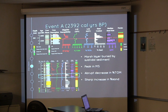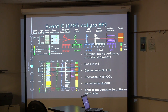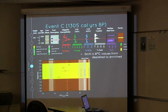Event A occurred at 2,392 Cal years BP and was characterized by a marsh facies overlain by sub-tidal sediment. We see a peak in magnetic susceptibility, an abrupt decrease in percent TOM, and a sharp increase in sands. Event B occurred at 1,832 Cal years BP and was characterized by marsh sediment overlain by mudflat sediments. We don't see a peak in magnetic susceptibility; however, we do see a decrease in percent TOM. Event C occurred at 1,305 Cal years BP — a mudflat layer overlain by sub-tidal sediments. We see a peak in magnetic susceptibility, a decrease in both percent TOM and percent TCO3, an increase in percent sand, and a shift from variable to uniform median sand size.